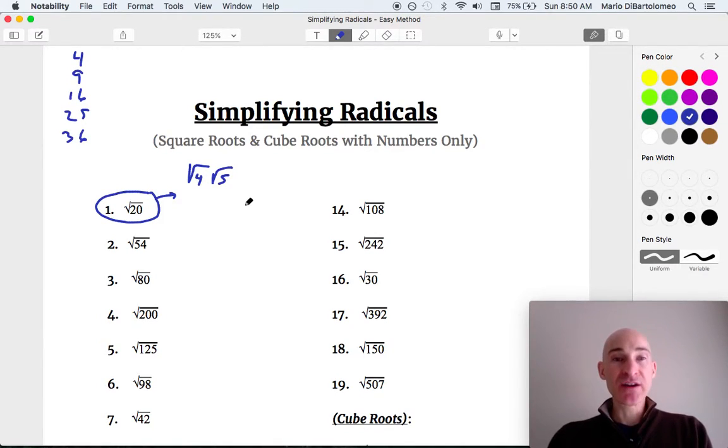Now that's one method. The other method that students like to do, and teachers like to show their students, is do a prime factorization tree. So what you would do is you would break down the number into its prime factors. But when you're taking the square root, what you're doing is you're looking for 2 of the same number.